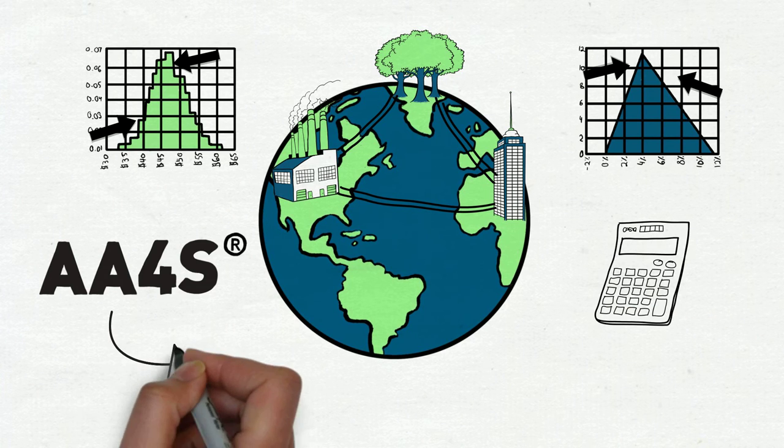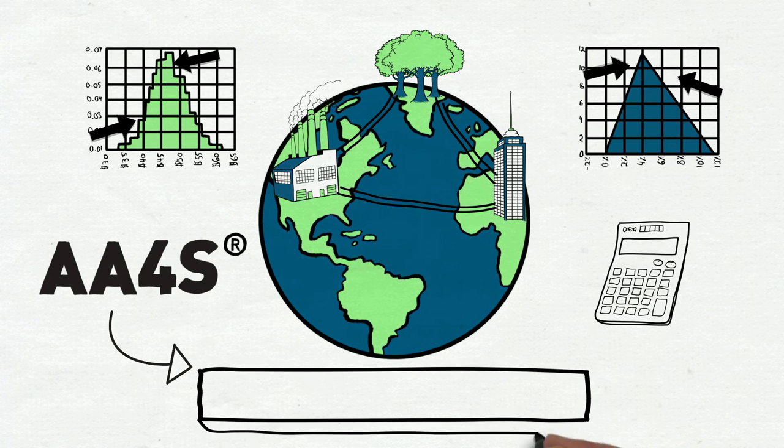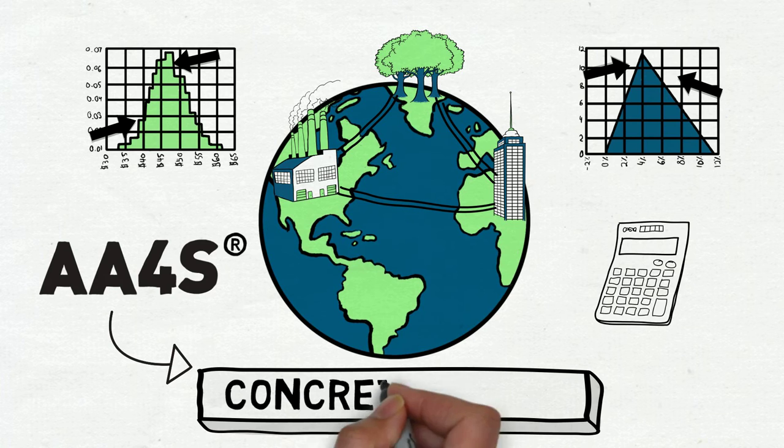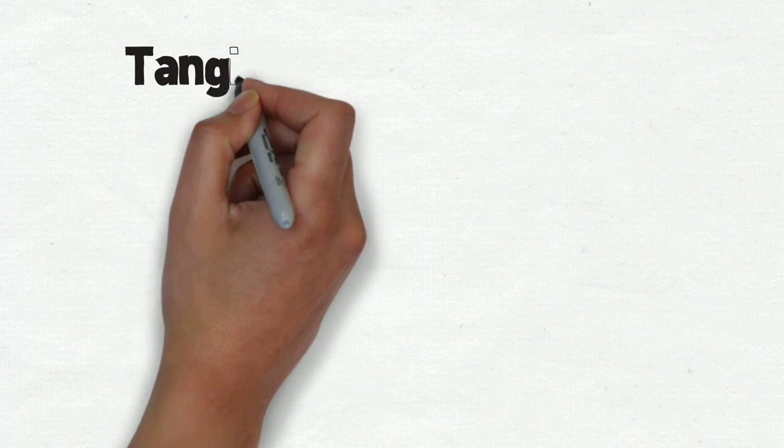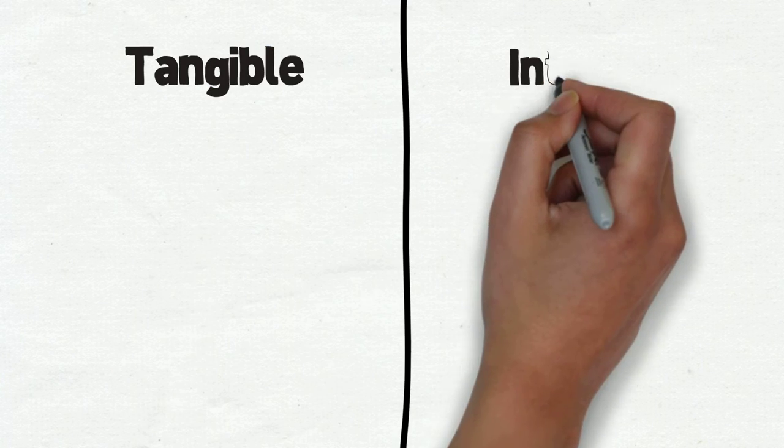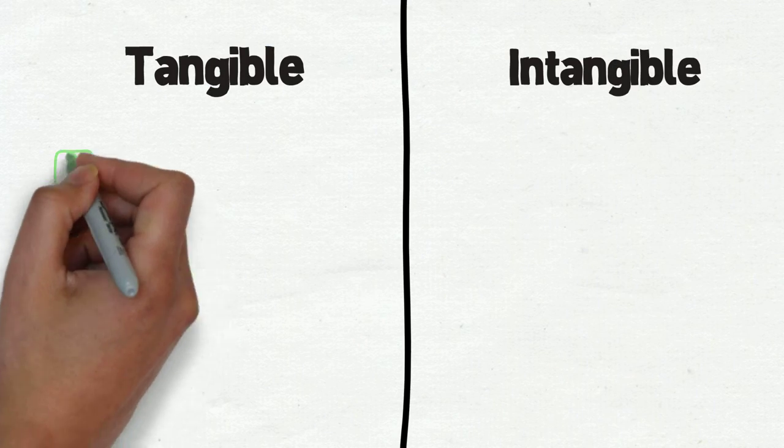AA4S is designed to pinpoint exactly how much your sustainable decisions contribute to financial success in concrete terms. It's a highly flexible solution that can quantify and monetize a range of tangible and intangible benefits,